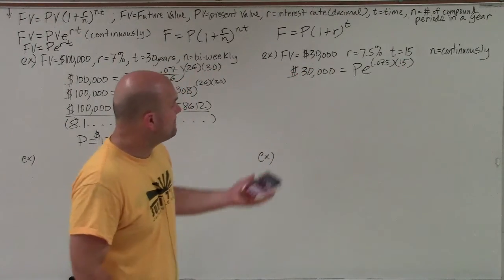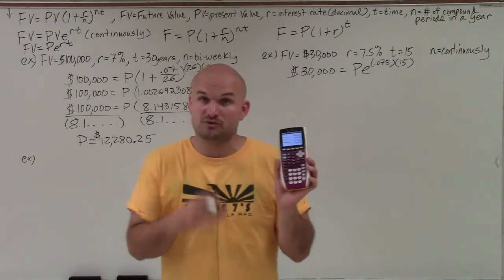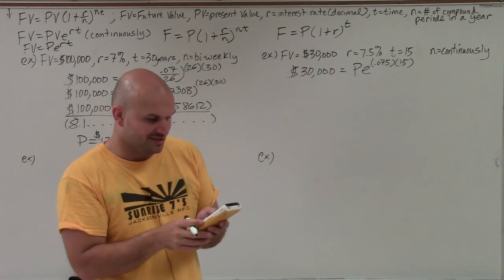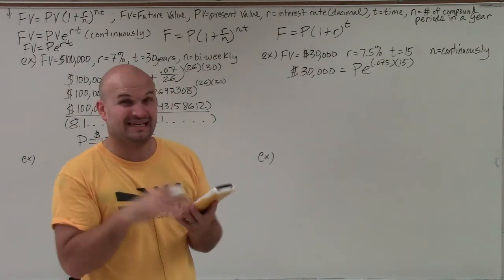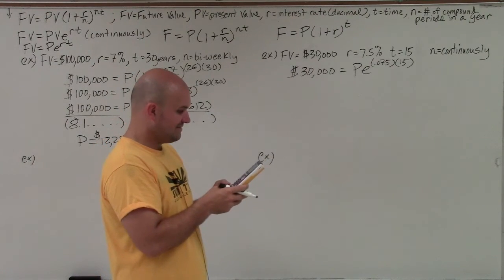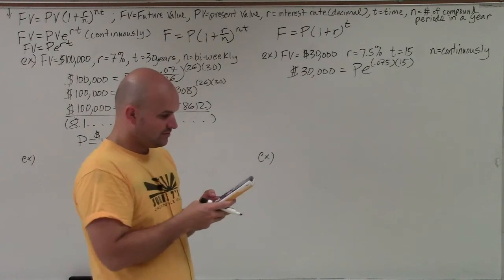OK? So basically what I can do here is I can use my e function where it says e raised to the x. So I'm just going to do second ln, which will give me e raised to a power. And I'll just do 0.075 times 15.